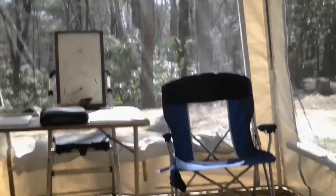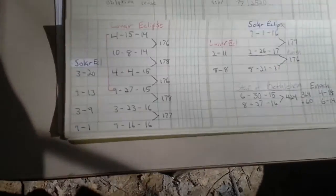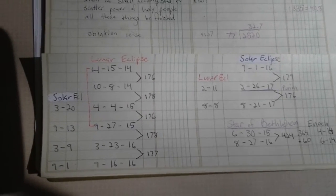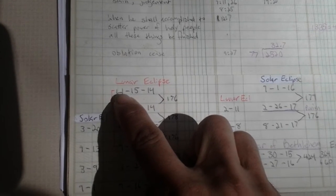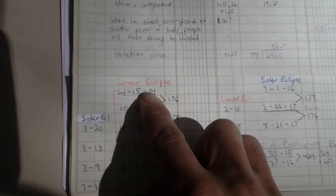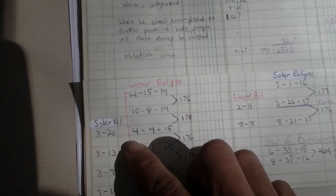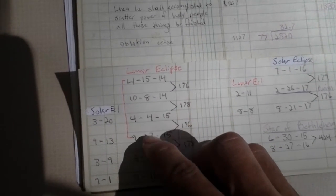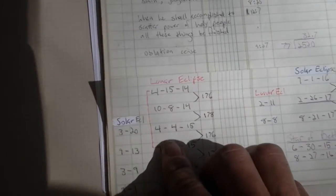Here are our four blood moons: Passover 2014, Tabernacles 2014, Passover 2015, and Tabernacles 2015. The last two had a solar eclipse two weeks prior — solar eclipse, two weeks later, blood moon. Then solar eclipse, blood moon.